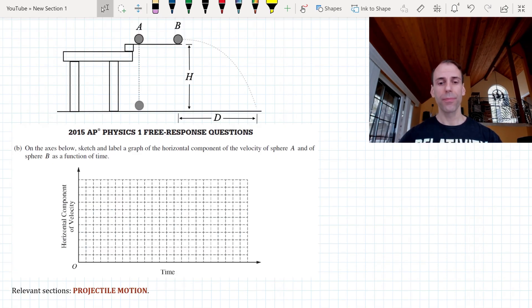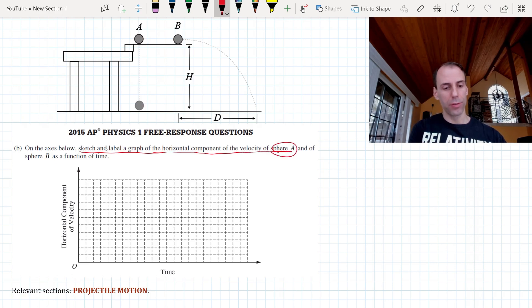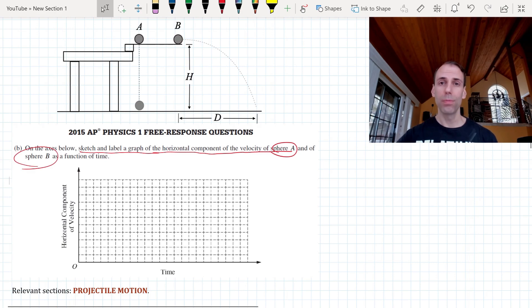Now on to part B. They're asking you to sketch and label a graph of the horizontal component of the velocity of both spheres, sphere A and sphere B, as a function of time. So you have your XY coordinates in front of you and remember you have to graph both spheres. Go ahead and pause, write your own graph down, and I'll see you in a second.